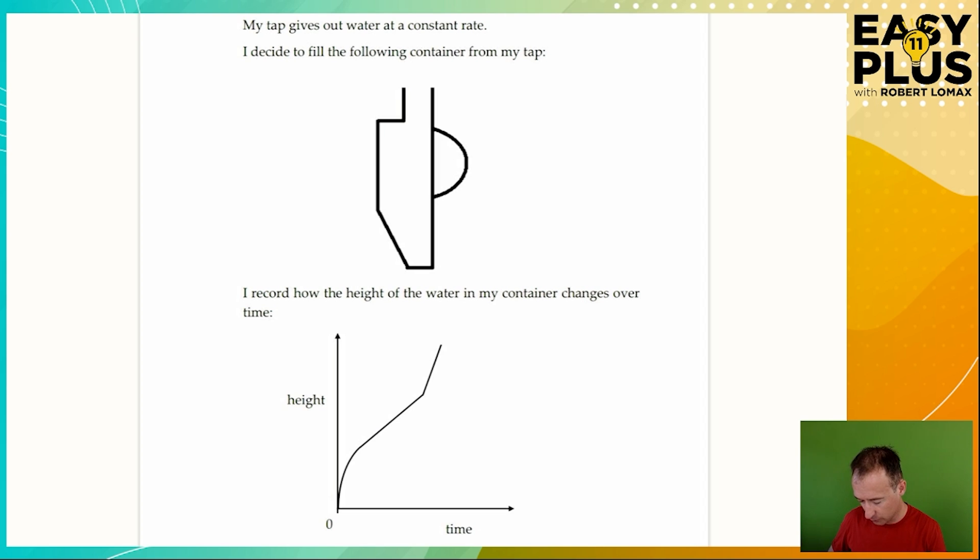I record how the height of the water in my container changes over time and here we have this graph with time across the bottom. So as you go further from left to right you're moving forwards in time. So here we're at 0 seconds and perhaps here we're at 30 seconds and here we're at a minute for example. And here we've got the height of water in the container going up this direction here.